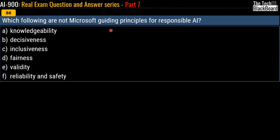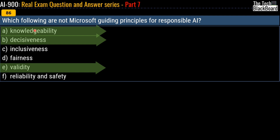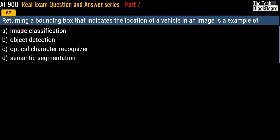Question 86 asks which of the following are NOT Microsoft's guiding principles for responsible AI. Please read questions carefully — this question asks for principles that are NOT guiding principles. The options are: knowledgeability, decisiveness, inclusiveness, fairness, validity, reliability, and safety. The correct answers are option A (knowledgeability), option B (decisiveness), and option E (validity) — these are not Microsoft's guiding principles for responsible AI.